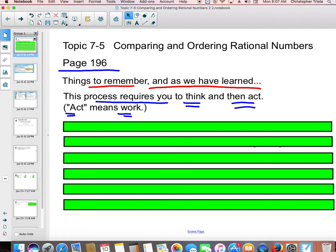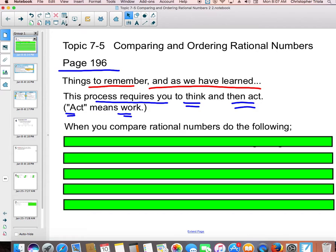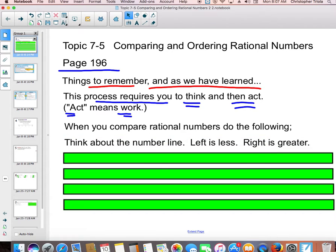So, here are some tips to help you related to comparing rational numbers, and much of this should be familiar. When you compare rational numbers, do the following. Number one, think about the number line. This is really important. Think about the number line. What you learned in first grade, kindergarten, second grade, third grade about the number line still applies. If you go left, you're getting lower in value. If you go right, you're getting greater in value.